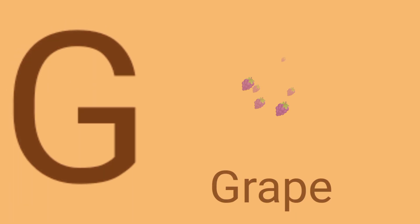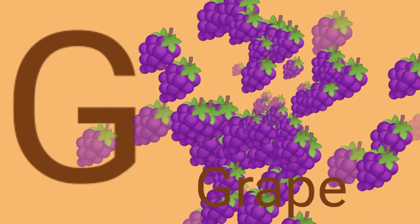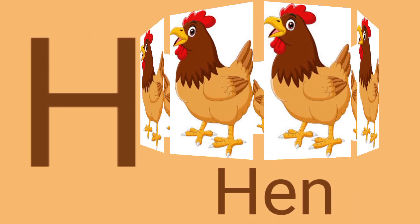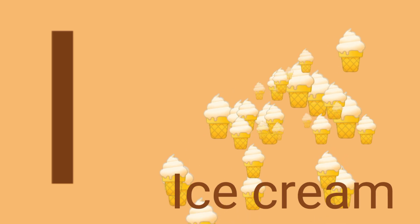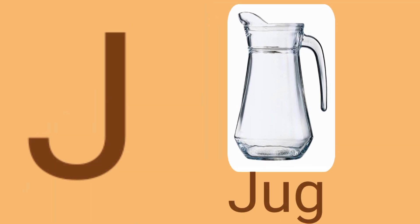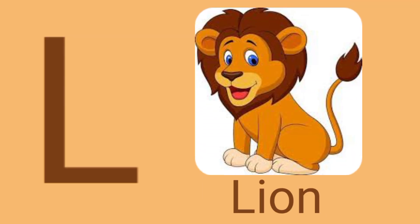G for grapes, H for hen, I for ice cream, J for jug, K for kite, L for lion.